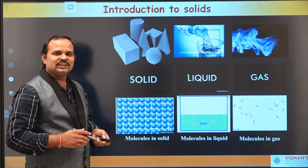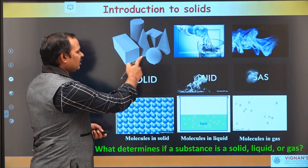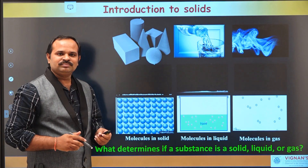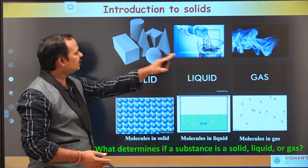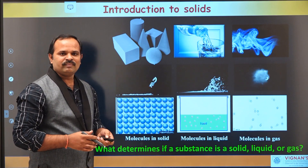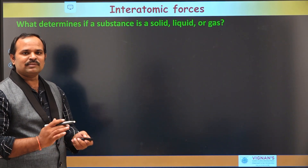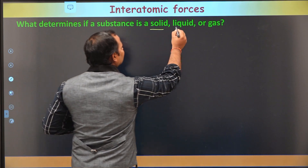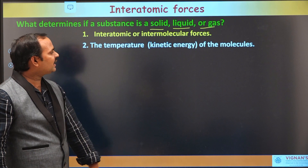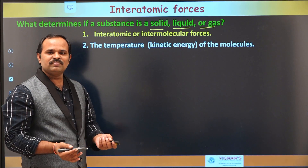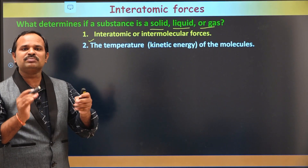Now, the question is: what determines if some material is a solid, liquid, or gas? What factors determine if some substance is in one of these forms? Well, there are two important properties that determine if a substance is a solid, liquid, or gas. The first one is interatomic or intermolecular forces between the atoms, and the second one is the temperature of the molecules or atoms in a substance.